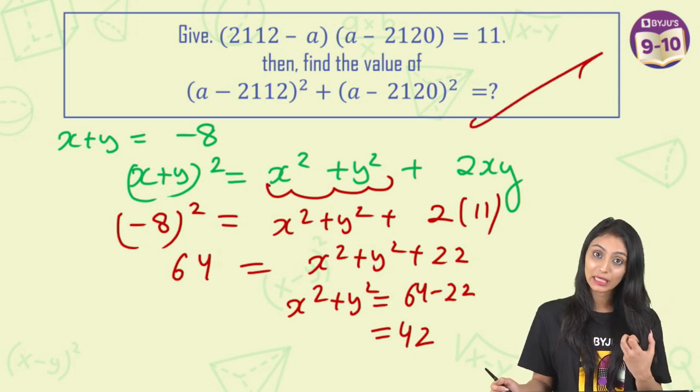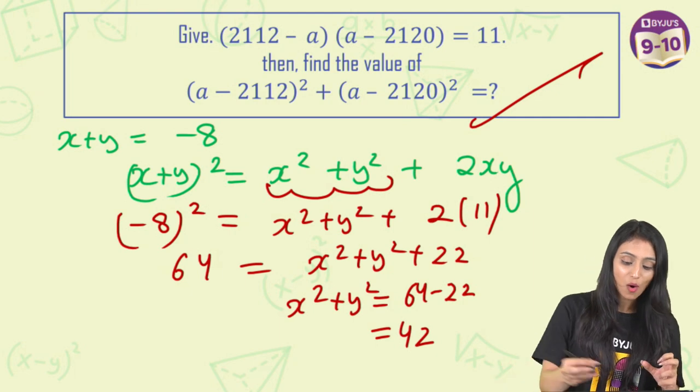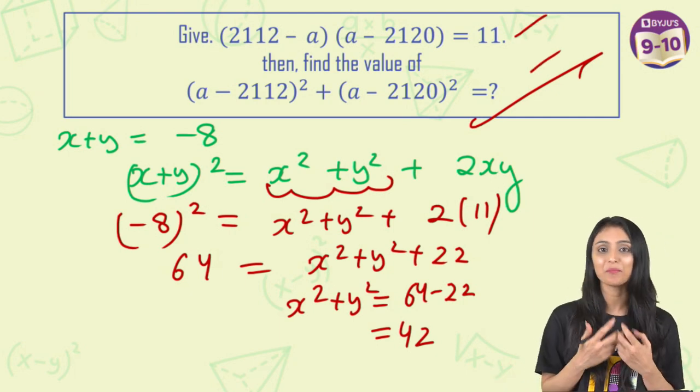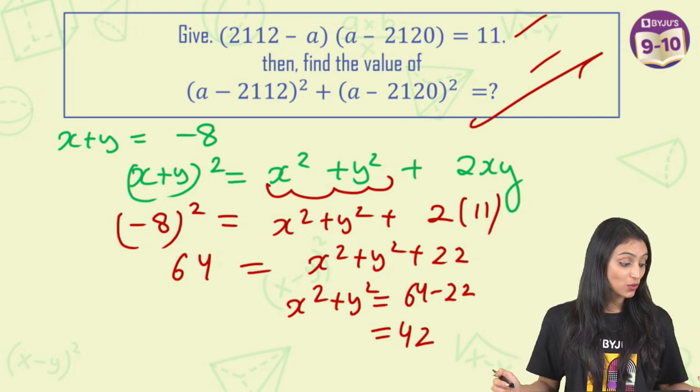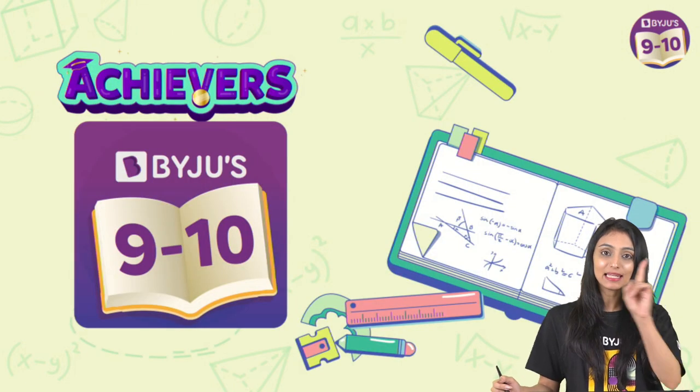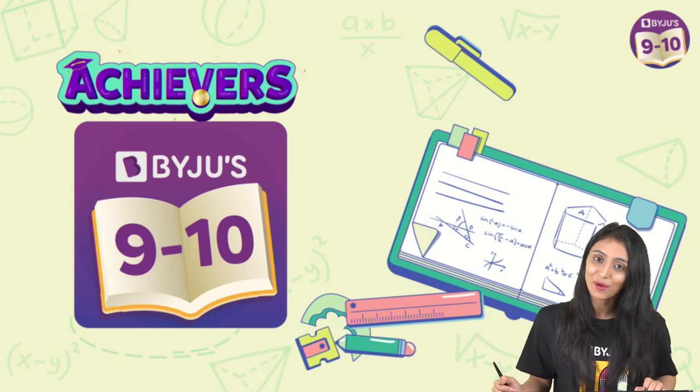See, initially this question looks so tricky, but we solved it so simply. All we did was, we just assumed it, we used the basic algebraic identity to find this out. Nothing new, right? Now, you can also try out questions like this and leave a comment for me in the comment section. How you like this question?